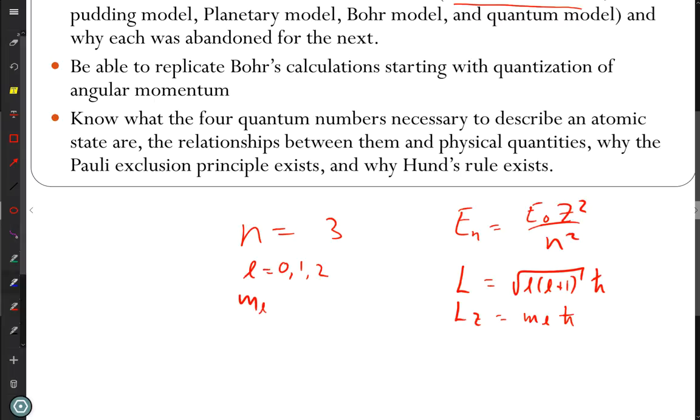So let us suppose, to make life easy, that l was one. What could m sub l values be? Negative one, zero, and one, which means you have three different lz amounts, three different orientations with the same total angular momentum. And then finally, the m sub s. What values can m sub s have? Always plus or minus one half.